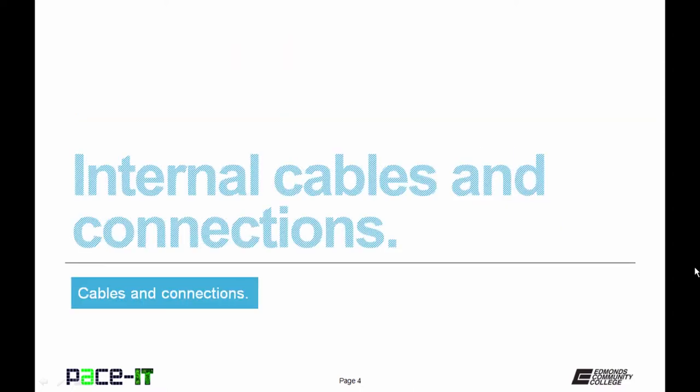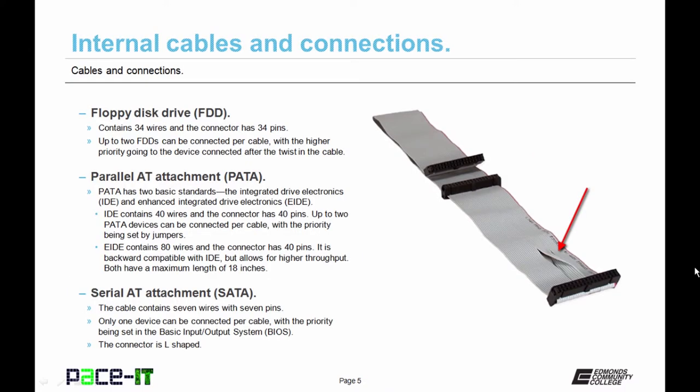And of course, we're going to begin by talking about internal cables and connections. And we start with the truly ancient, the floppy disk drive cable and connection. Now the FDD cable has 34 wires and it has 34 pins on the connection. You can connect up to two floppy disk drives per cable with the higher priority going to the device that connects after the twist in the cable. That would be your A drive.